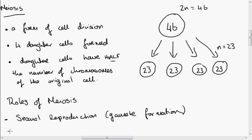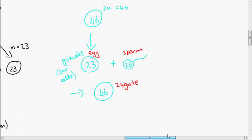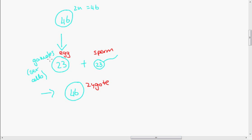Another role of meiosis is variation. It increases variation in the population. So meiosis, as we can see here, this egg cell is genetically different to the cell from which it came.